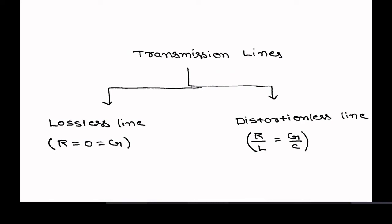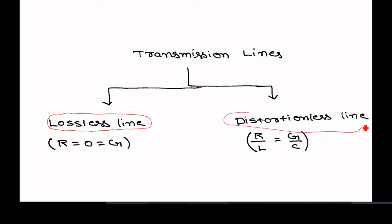The next concept is transmission lines, which we can classify into two types: one is the lossless line, and the other one is the distortionless line. We will see them one by one — when a transmission line is said to be lossless, and when it is said to be distortionless.